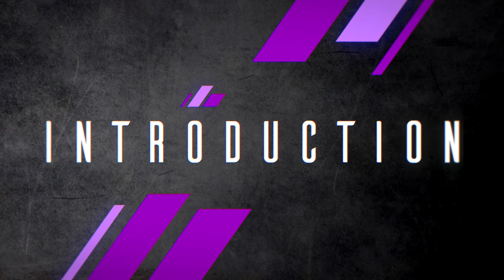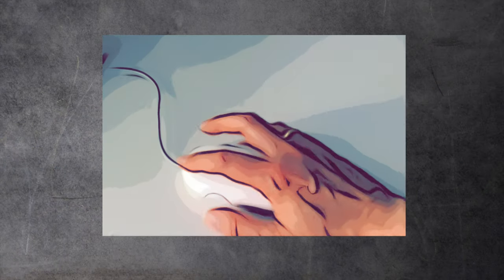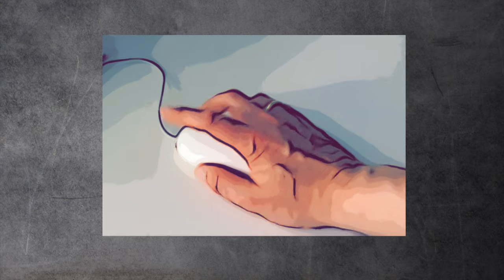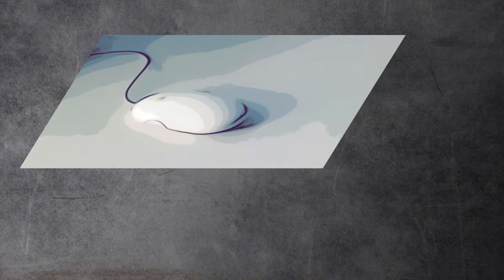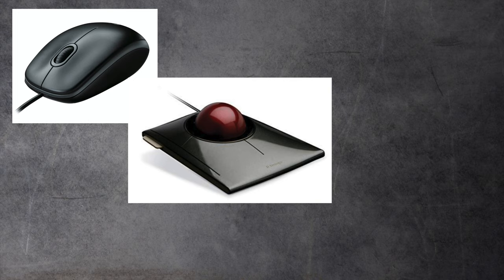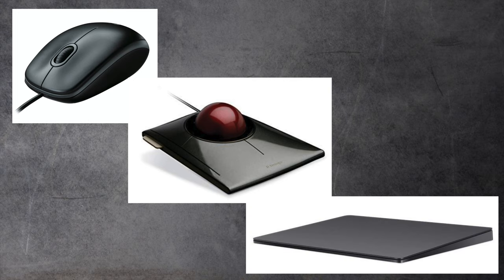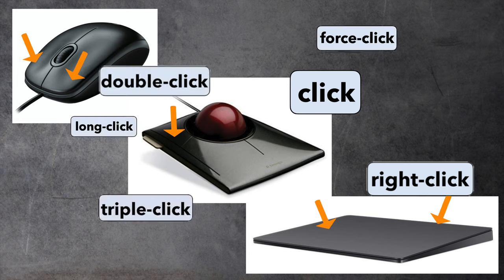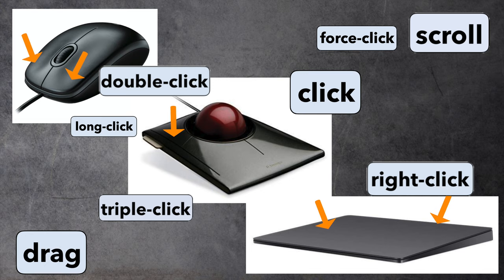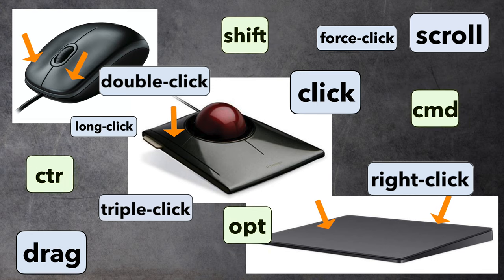Mouse click actions might sound simple and easy because everybody knows how to use a computer mouse — you move the pointer to a specific area and click. But not only are there many different types of devices like a traditional computer mouse, a trackball or trackpad, the area where it gets confusing is the actual click. There are many different types: left click, right click, long click, force click, double click, and even triple click. And in addition, pressing down various modifier keys on your keyboard while clicking.